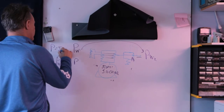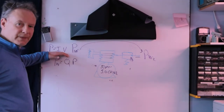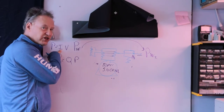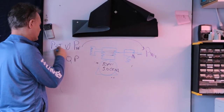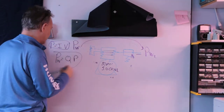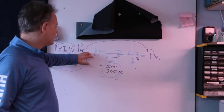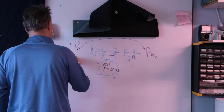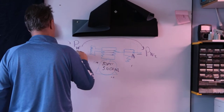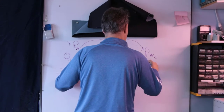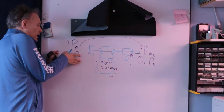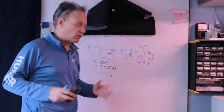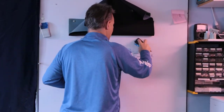We know that power equals current times voltage in electricity. With the same convention applied to pneumatics: if the power on the inlet side equals the power on the outlet side, we can say Q1 times P1 equals Q2 times P2. The power on this side is the same as the power on that side, and we can broaden that concept.